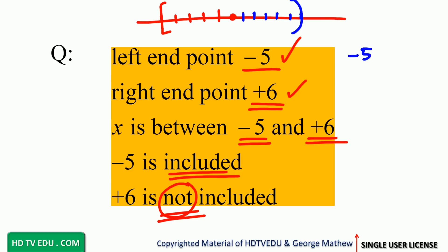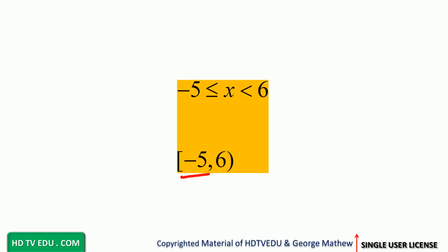Negative 5 is less than or equal to, because we have a square bracket on the left. And on the right, just less than 6. Negative 5 less than or equal to x less than 6. So we put square bracket, negative 5, and close it with parenthesis. 6 is not part of the solution.